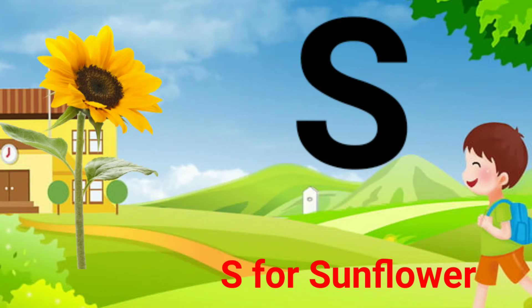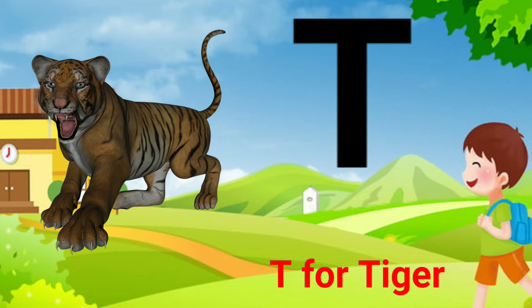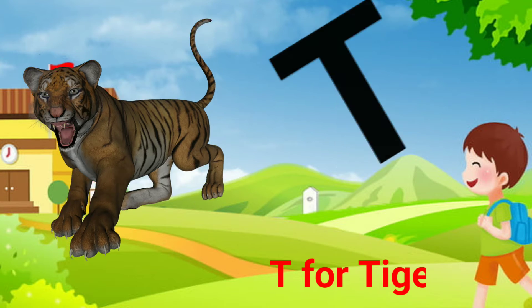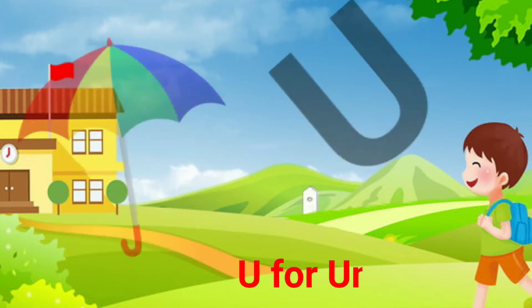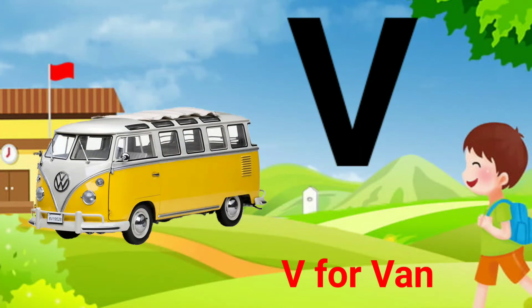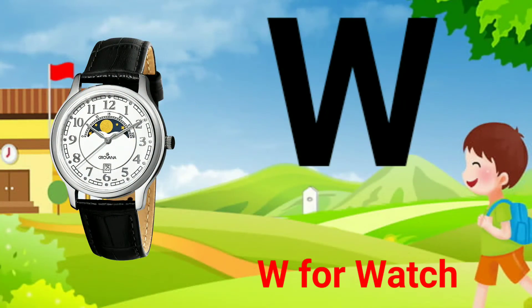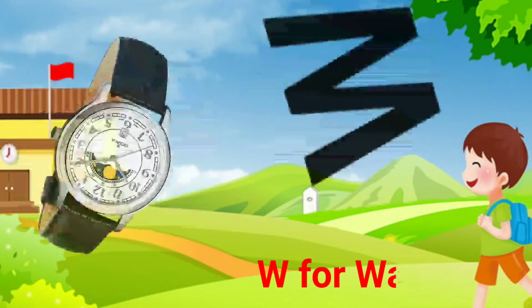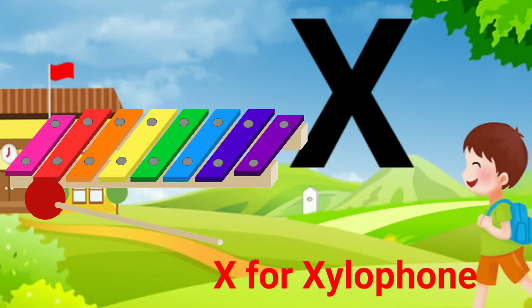S for sun clover, T for tiger, U for umbrella, V for van, W for watch, X for xylophone.